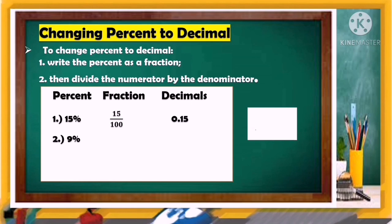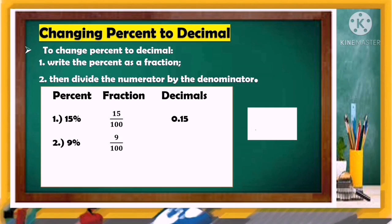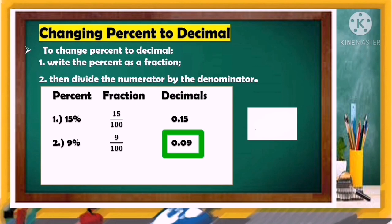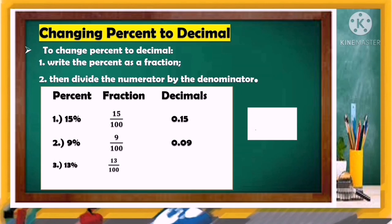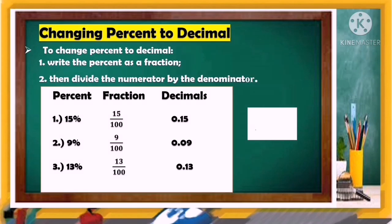Let's try to answer. Number two — 9 percent. Its fraction is 9 over 100. Divide 9 by 100 and the answer is 0.09, or nine hundredths. Number three — 13 percent. Its fraction is 13 over 100. Divide 13 by 100 and we get 0.13, or thirteen hundredths. Did you get it? It's easy, right?